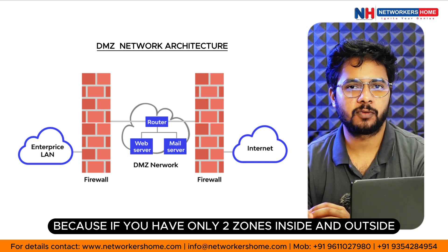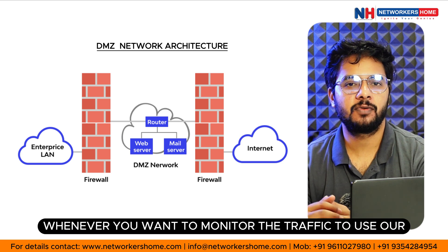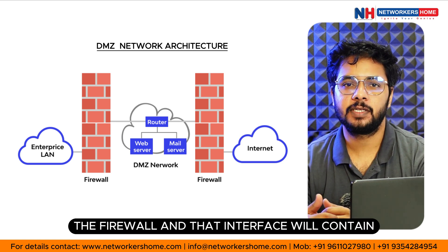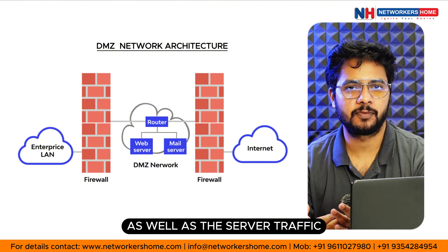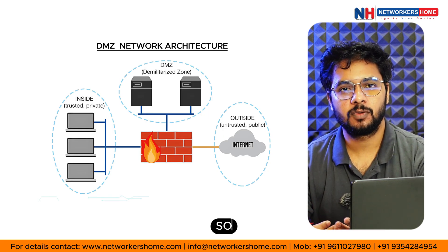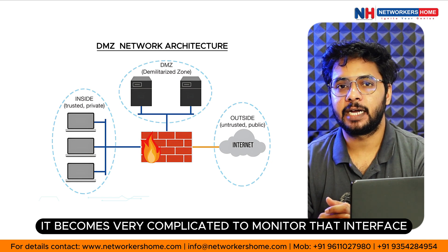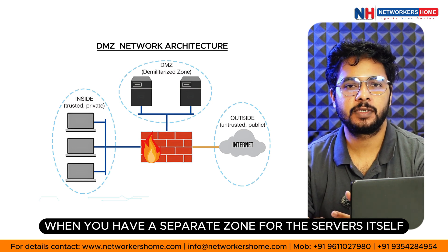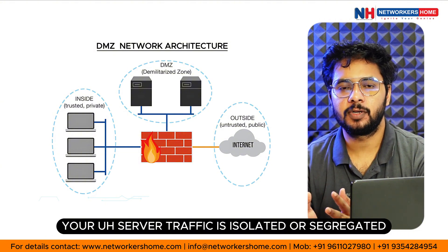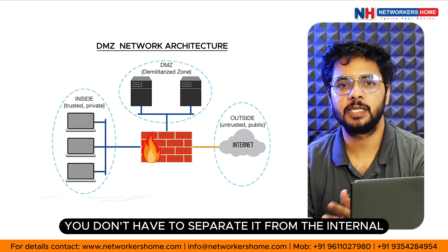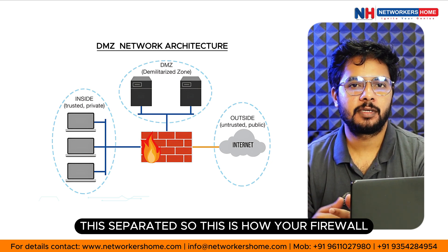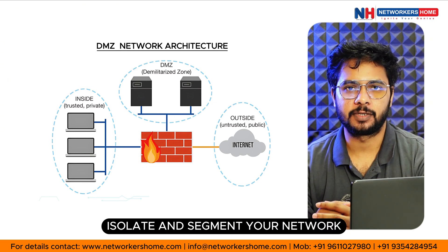This also helps with reporting and monitoring. If you only have two zones — inside and outside — whenever you want to monitor traffic to your server, you go through one firewall interface that contains both your internal network traffic and your server traffic. That is a huge amount of traffic and logs for that one interface, making it very complicated to monitor. When you have a separate zone for the servers, you just need to monitor that zone's traffic — your server traffic is automatically isolated and segregated from the internal network traffic.